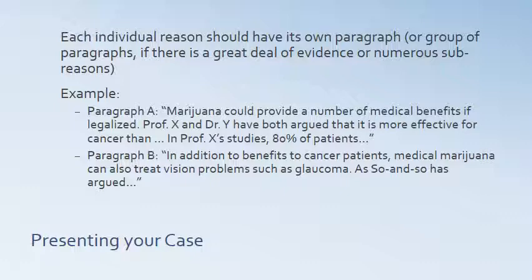For example, you could start one paragraph: 'Marijuana could provide a number of medical benefits if legalized. Professor X and Dr. Y have both argued that it is more effective for cancer than...' You explain their basic argument and thesis, then provide the evidence: 'In Professor X's studies, 80% of patients...' The next paragraph, continuing on medical benefits, could say: 'In addition to benefits to cancer patients, medical marijuana can also treat vision problems such as glaucoma, as so-and-so has argued.' Then you'd present the evidence from a different source.